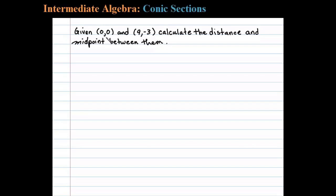Given two ordered pairs (0,0) and (9,-3), we're asked to calculate the distance and midpoint between them. Let's begin with the distance formula.